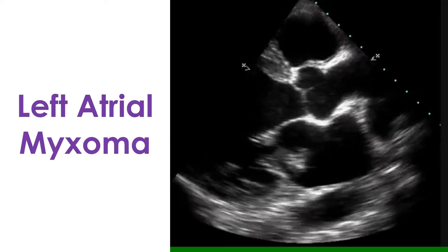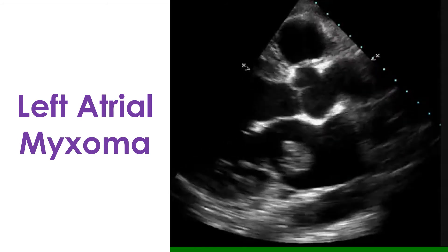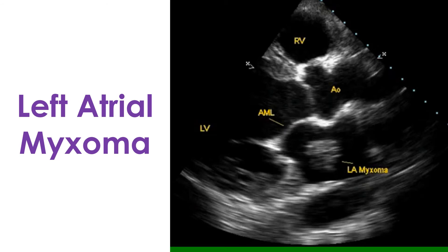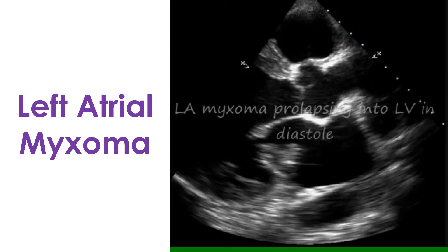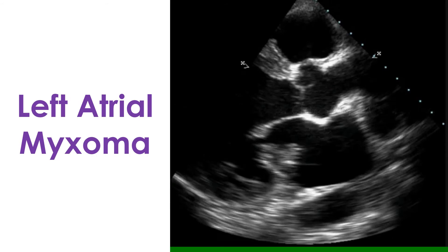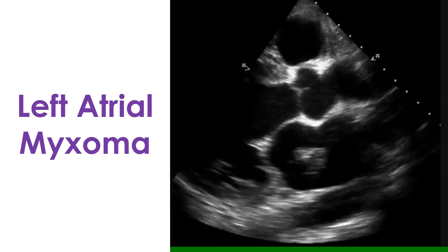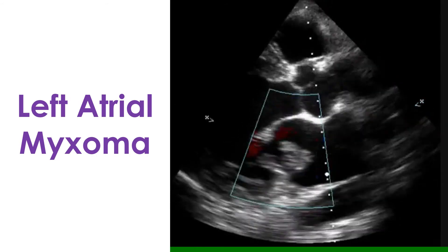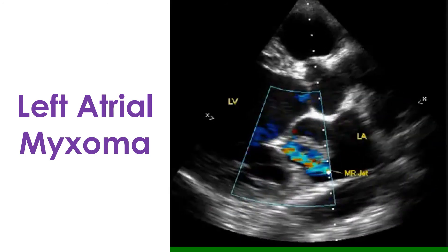A short video clip shows a left atrial myxoma. In diastole, the mass is seen moving into the open mitral valve. A multi-coloured mitral regurgitation jet is seen behind the mass. Mitral regurgitation is a leak in the mitral valve between the left upper and lower chambers.